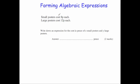Our next question. Small posters cost 8p each, large posters cost 12p each. Write down an expression for the cost in pence of x small posters and y large posters. Okay, we're buying x small posters and they cost 8p each. So one poster would cost 8p, two posters would cost 16p, three posters would cost 24p. You'd multiply the 8p by how many small posters there are to find the cost for the small posters. So for the small posters it's going to be 8x.